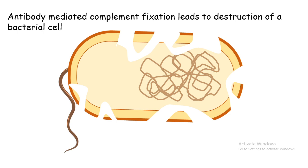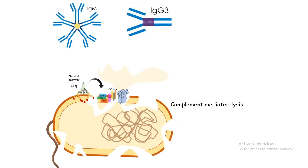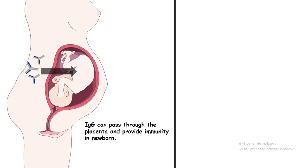In terms of the potential for complement fixation, IgM has higher potential than IgG versions because IgM can interact with far more antigens simultaneously than IgG. So complement fixation is both isotype-dependent and affinity-dependent.